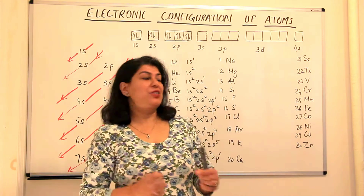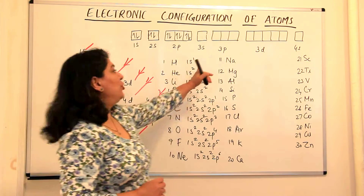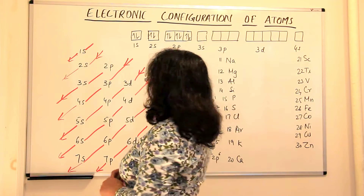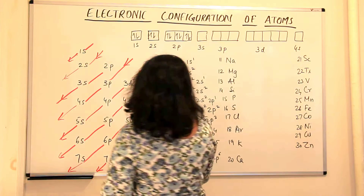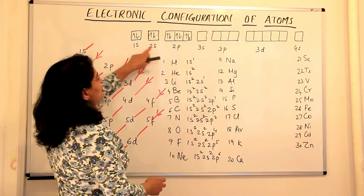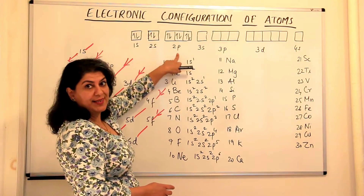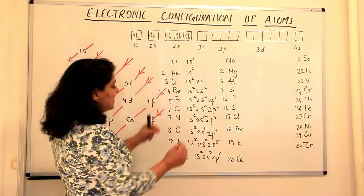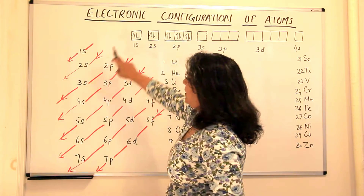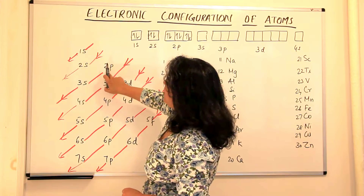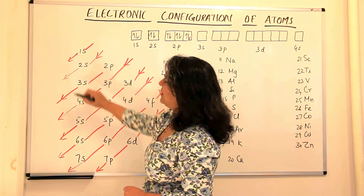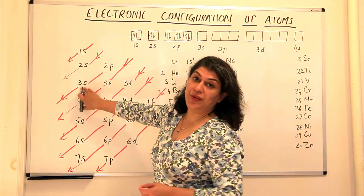Our next element on the list is sodium. Sodium has atomic number 11 and 11 electrons. As we did in the previous video up to neon — neon is the 10th element with configuration 1s2, 2s2, and 2p6 — sodium's 11th electron moves on to the next orbital. Here, 1s, 2s, and 2p have been filled up.